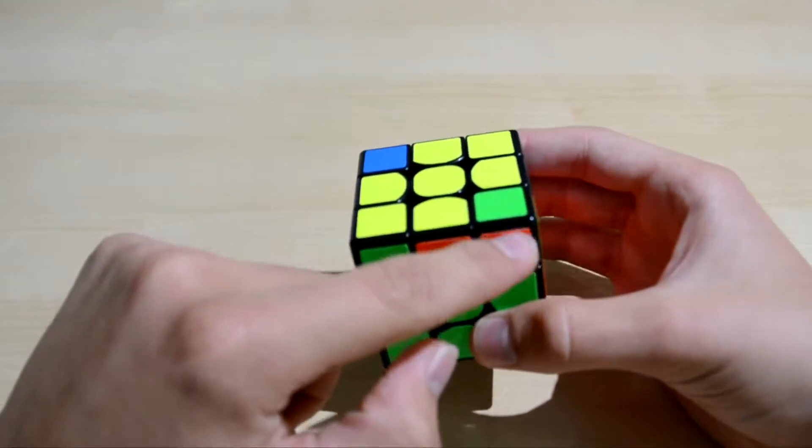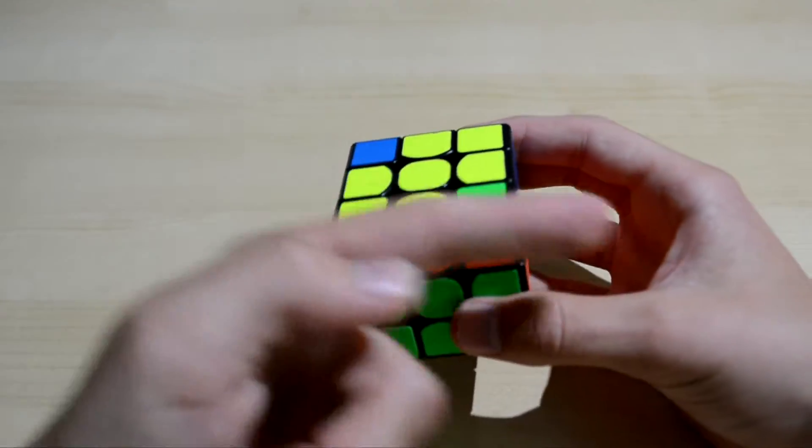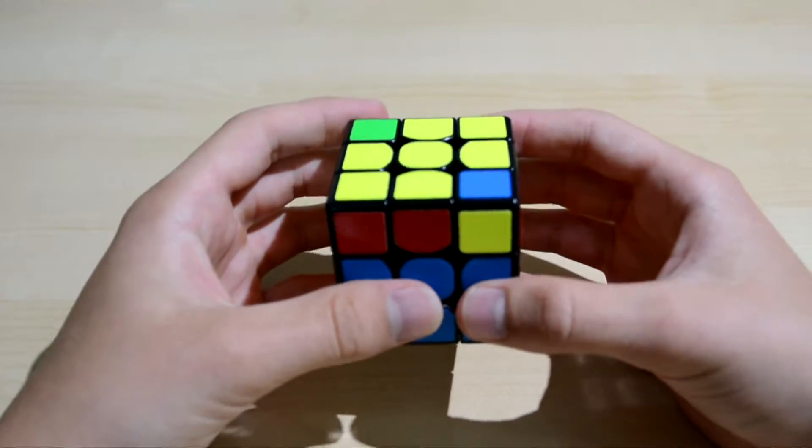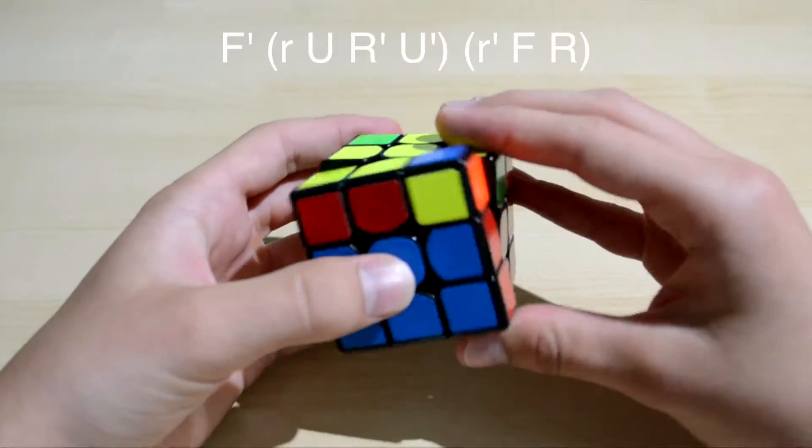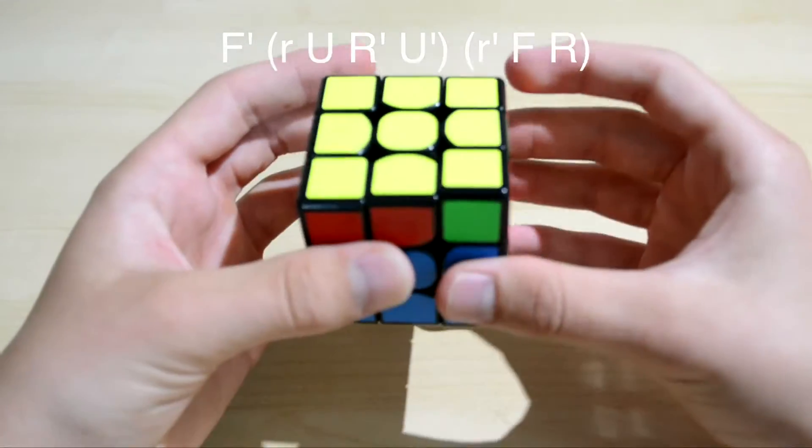If you hold it like this, it's wrong because the yellow side is facing to the right. So you hold it like this and then you perform the algorithm F R U R' U R' F R.